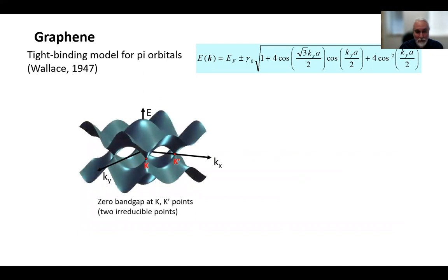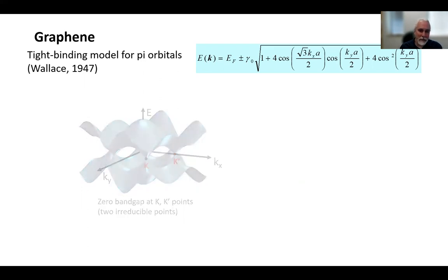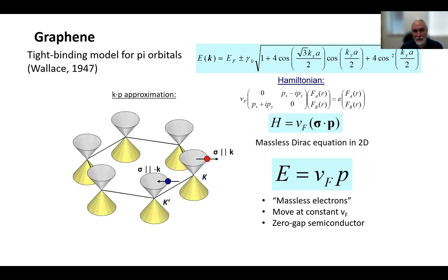The bands of graphene look something like this. We have conduction and valence bands that meet at these K points in the corners of the first Brillouin zone. And if we expand in small momenta around those points, graphene's band structure looks like this. It's conical. The bands are linear. They're described by an equation that looks like the massless Dirac equation in two dimensions. So sometimes we call this a Dirac material.